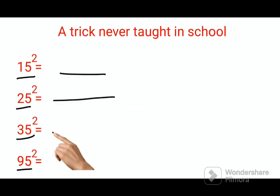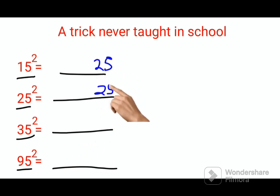All your answers will have a very common last two digits, and that will be 25. Then the first part of your answer: you just multiply the tens digit with the next number.